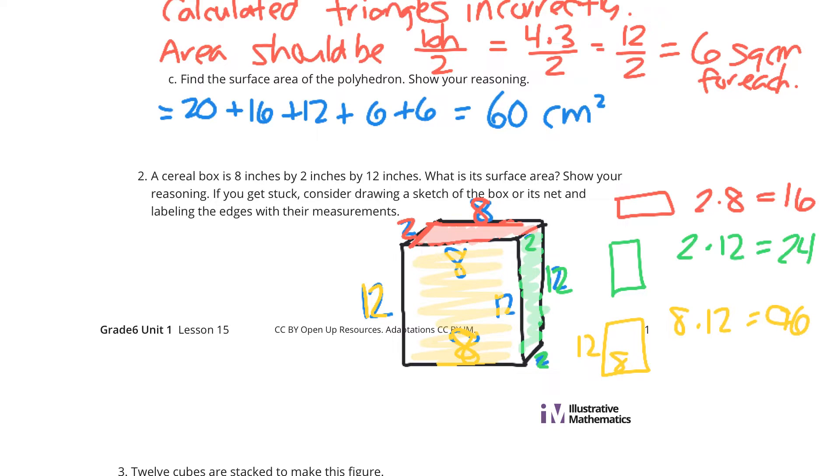Now, if I add all of these up, 16 with 24 and 96, these three rectangles I can see, we get 136 square inches. But that's only half of the story. We need to multiply this by 2 to get our final answer of 272 square inches.